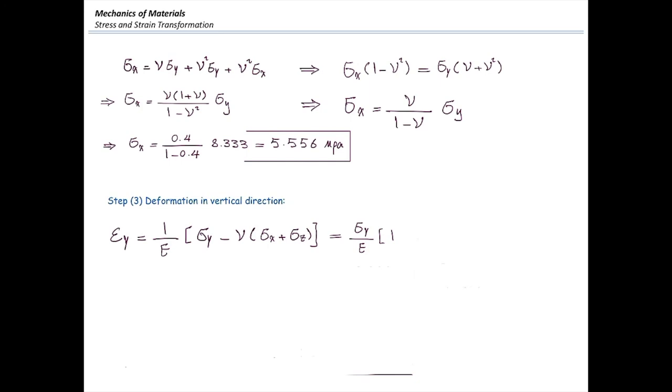If we factor out sigma y out of the equation, that would give us sigma y divided by e multiplied by 1 minus 2 nu squared divided by 1 minus nu. We have determined how much is strain in the y direction.